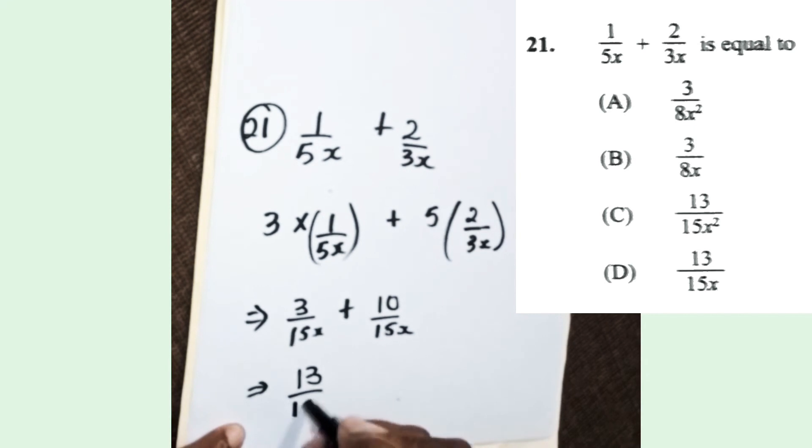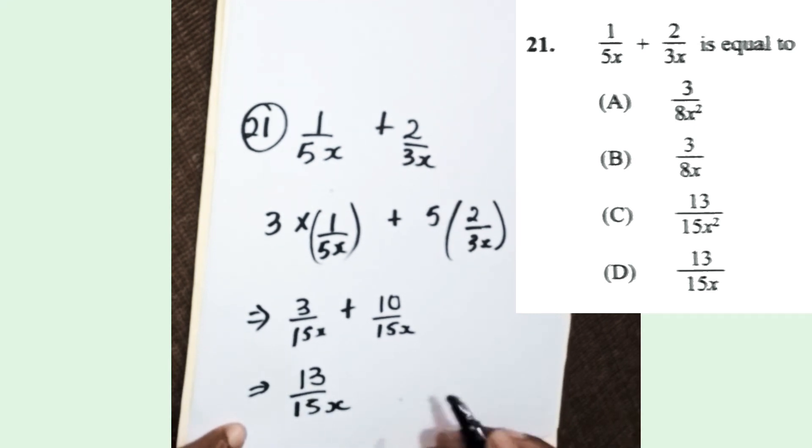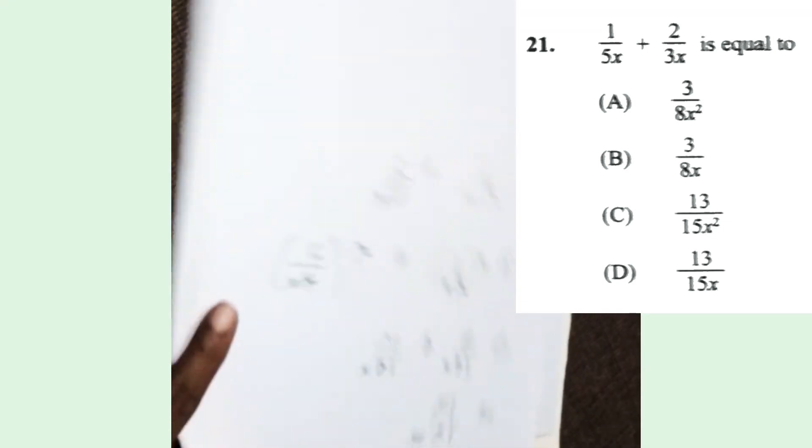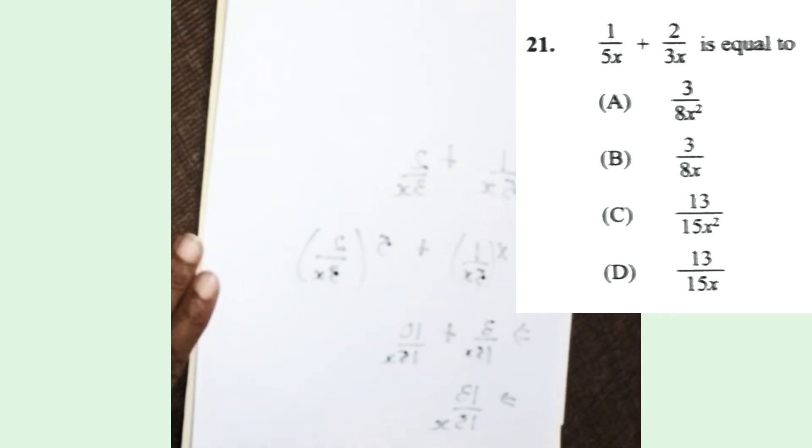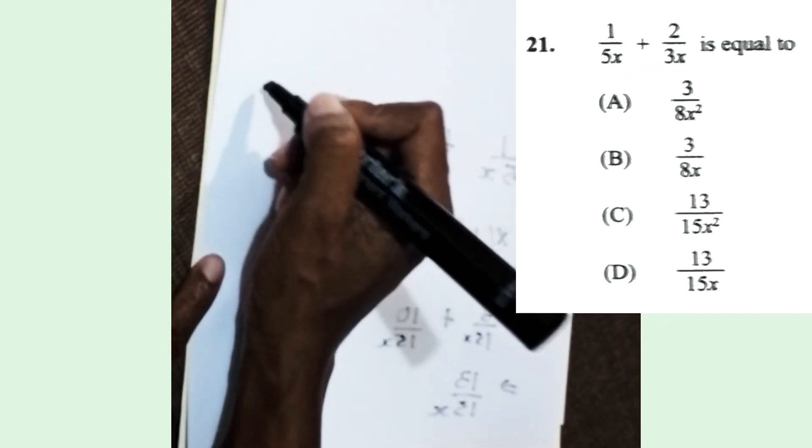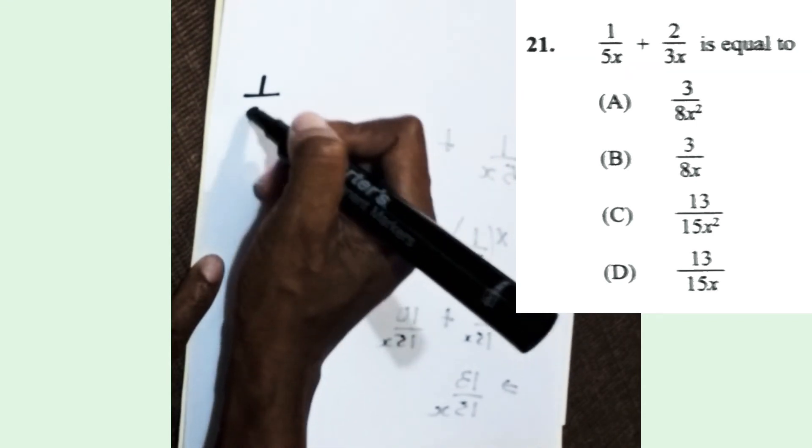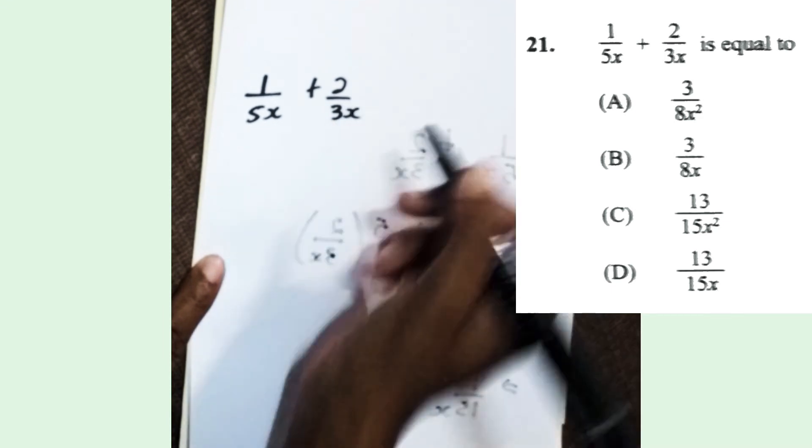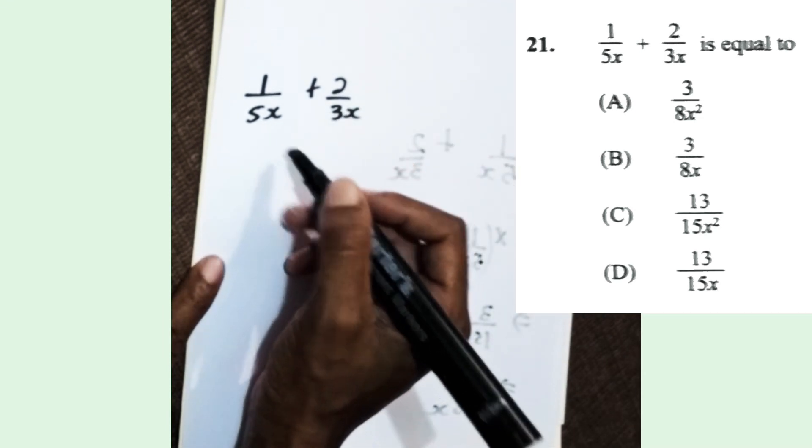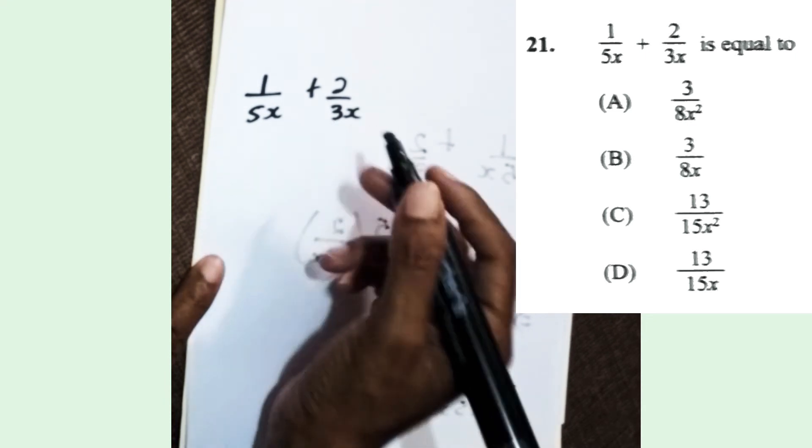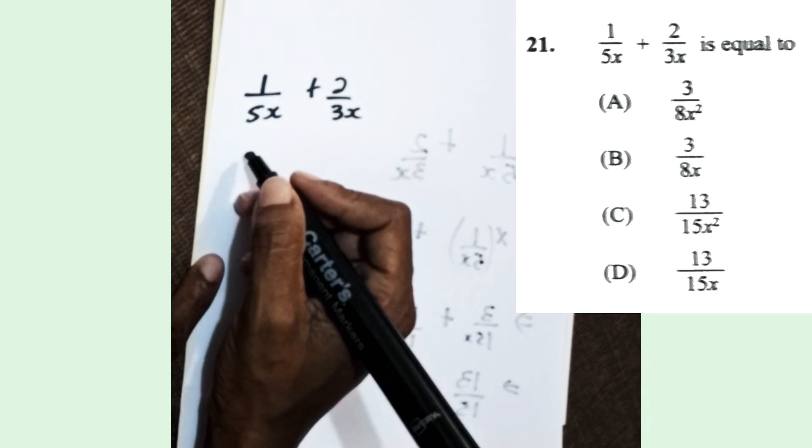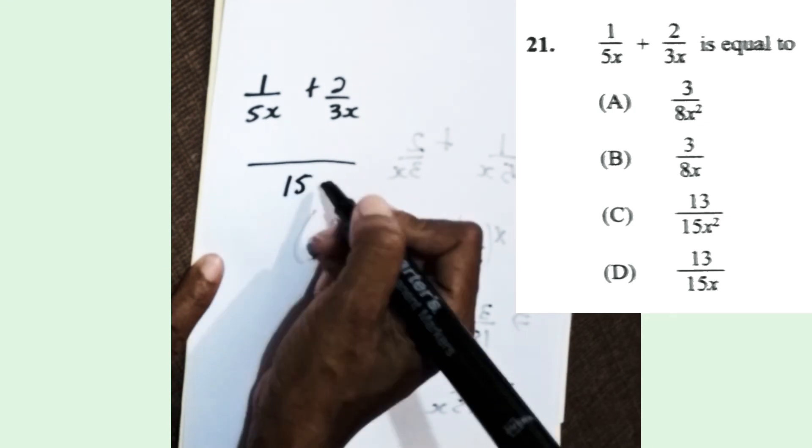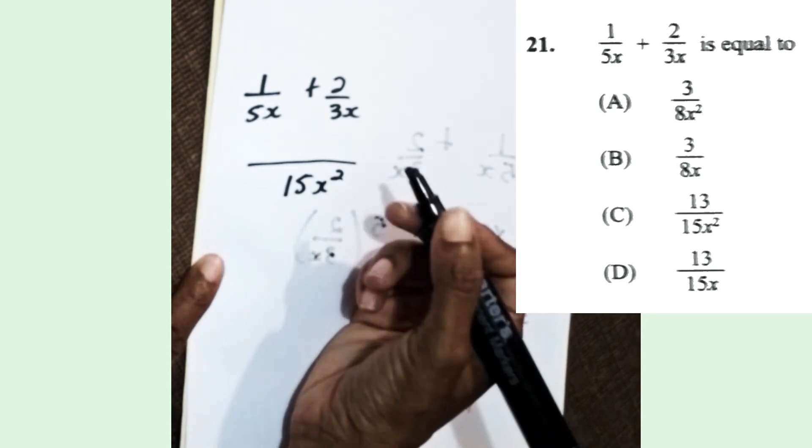So the answer is 13 over 15x. Once the denominators are the same, we can add the numerators. Now say you didn't remember how to do this and you're contemplating your answer—you feel like you should have multiplied the denominators. Well, let us look at if we had multiplied the denominators. We would end up with 5 times 3, which is 15, and x times x gives us x squared.